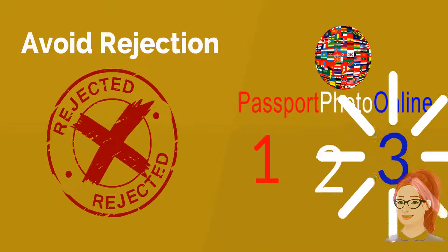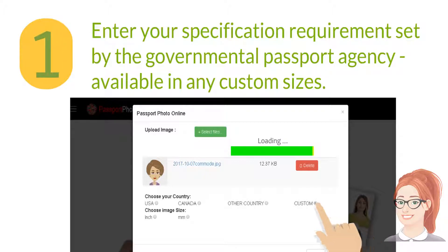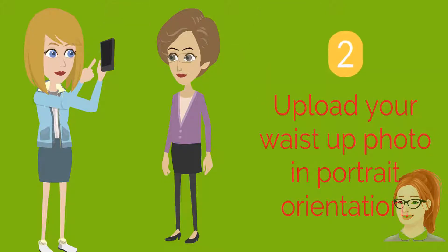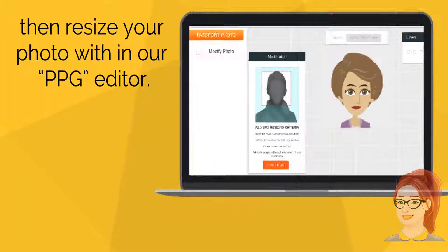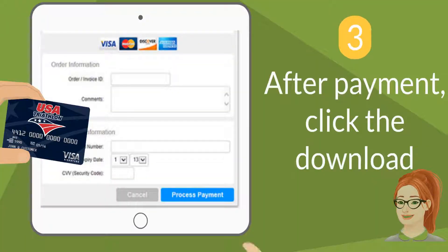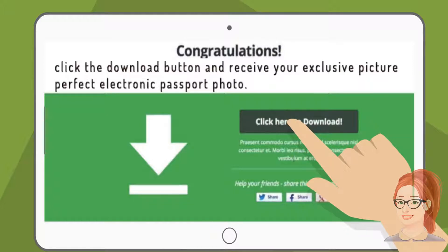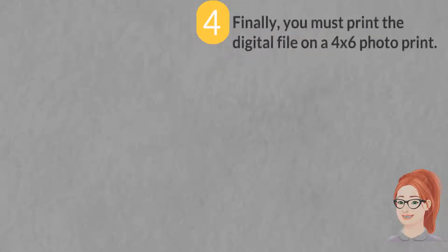It's as easy as one, two, three. Step one: enter your specification requirements set by the governmental passport agency — available in any custom sizes. Step two: upload your waist-up photo in portrait orientation, then resize your photo within our PPG editor. Step three: after payment, click the download button and receive your exclusive picture-perfect electronic passport photo.